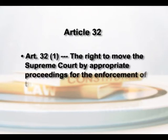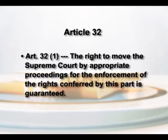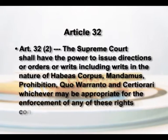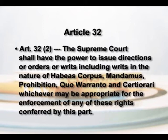Article 32, which is itself a fundamental right, reads as follows. Clause 1 states that the right to move the Supreme Court by appropriate proceedings for the enforcement of the rights conferred by this part is guaranteed. Clause 2 says that the Supreme Court shall have the power to issue directions, orders, or writs in the nature of habeas corpus, mandamus, prohibition, quo warranto, and certiorari, whichever may be appropriate for the enforcement of any of the rights conferred by this part.